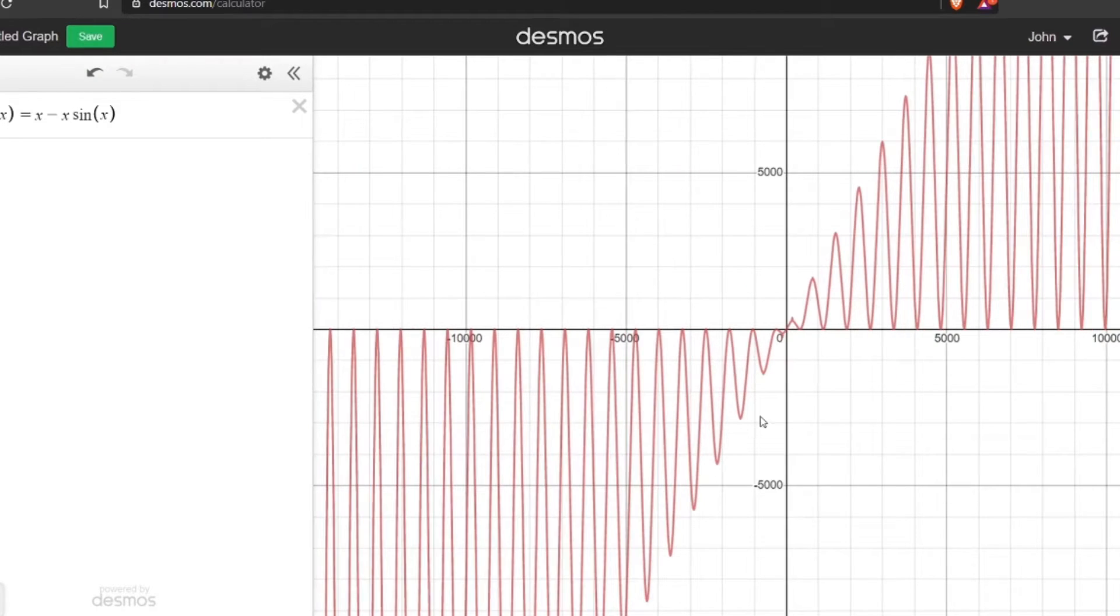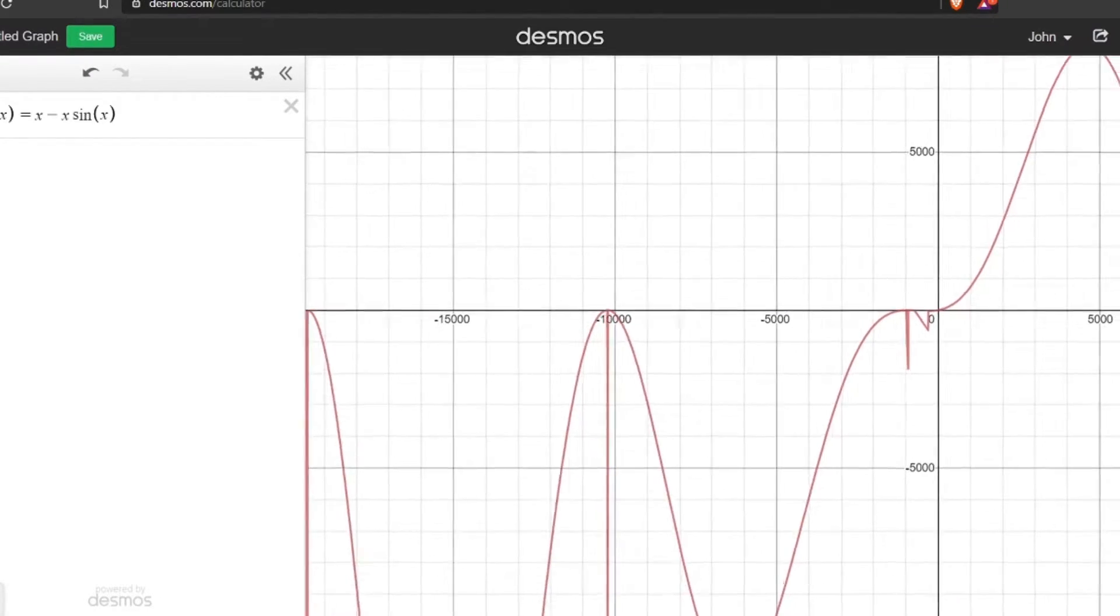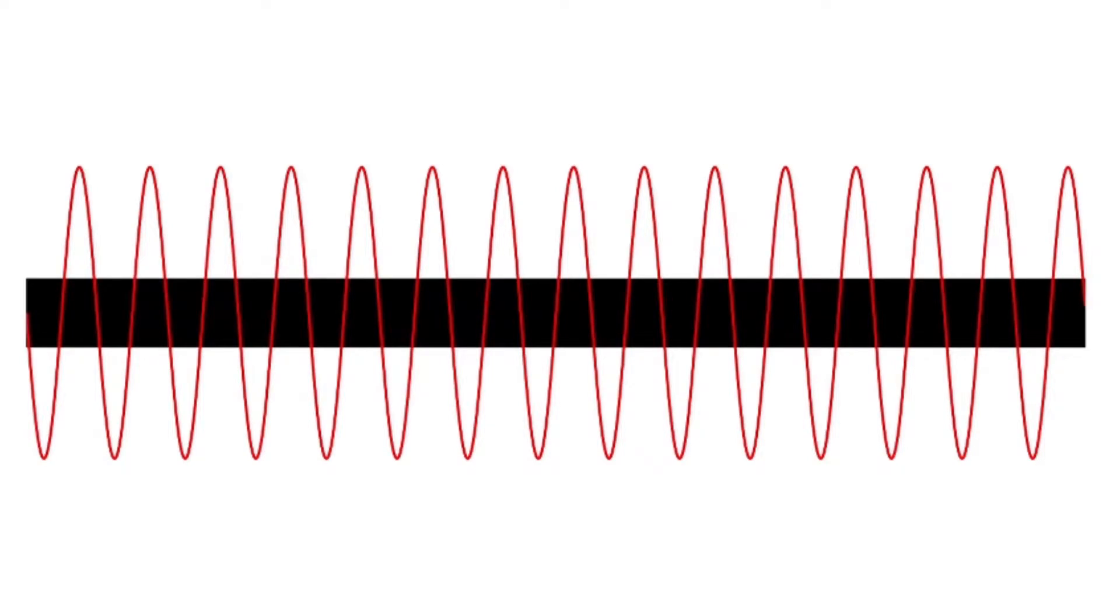This is cool and all, but our graph isn't a straight line, so how does that work? Well, watch what happens when we change the period slightly of our sine wave.